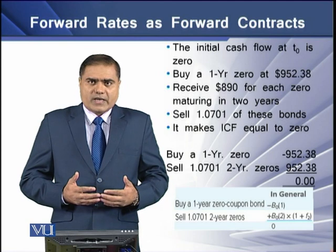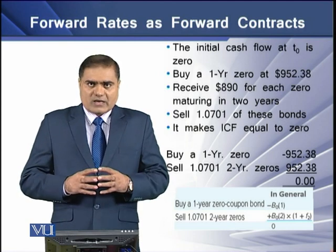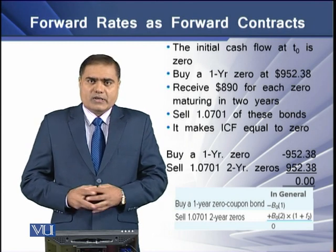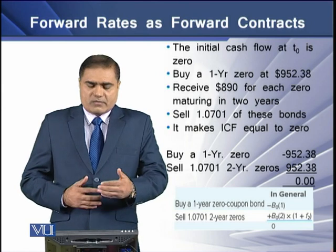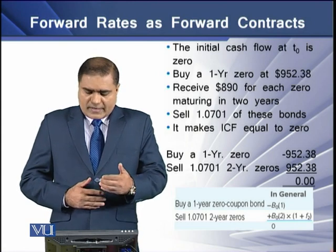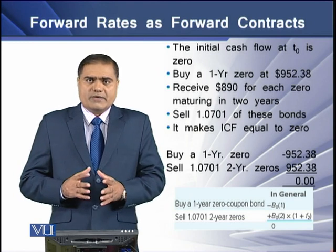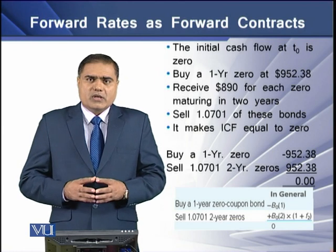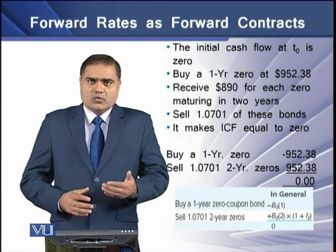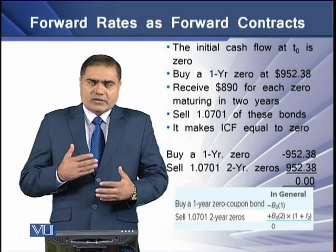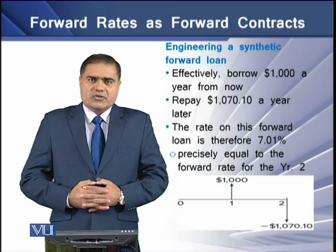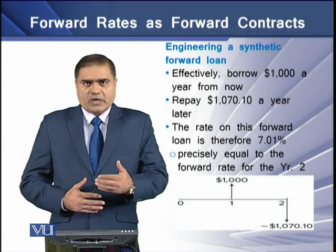Generalizing the values: buy a one-year zero coupon bond, that is negative B₀(1), where B₀ is the bond's value at time zero. Sell 1.0701 two-year bonds, which equals plus B₀(2) multiplied by (1 + f₂), where f₂ is the forward rate and B₀(2) is the bond value at the end of year two. This expression confirms that the resulting value equals zero — the net value of the initial and resulting cash flows is zero. We are therefore engineering a synthetic forward loan.